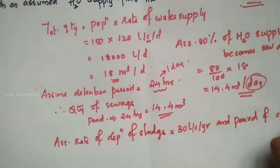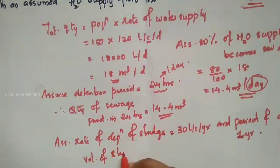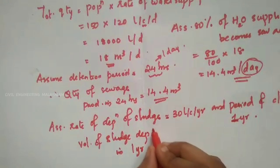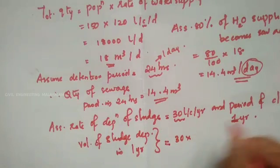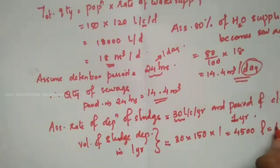We assume the period of cleaning is 1 year. The volume of sludge deposited in 1 year equals the rate of sludge, which is 30 litres, multiplied by the population of 150. That gives 4,500 litres, which equals 4.5 m³.